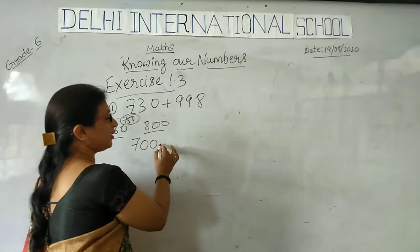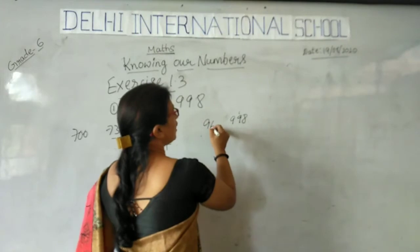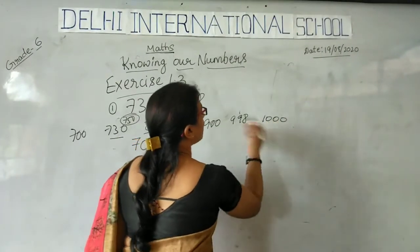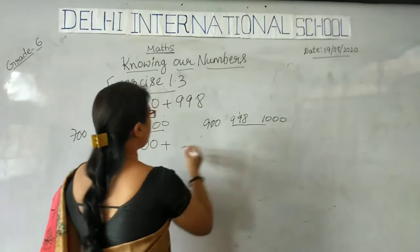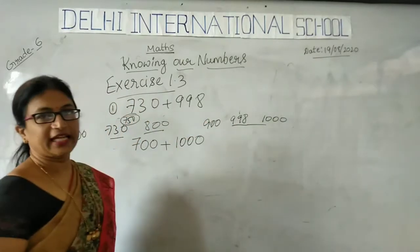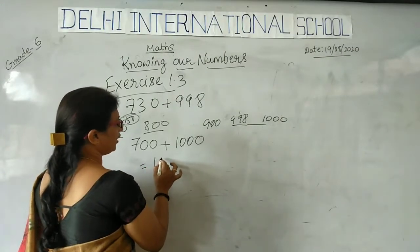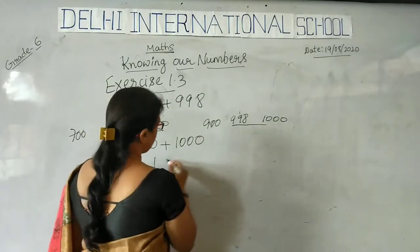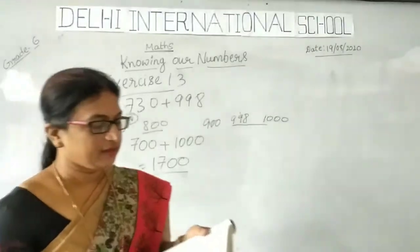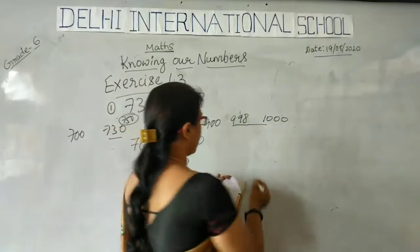So 998 is nearer to 900 or 1000 — it is definitely nearer to 1000. So instead of 998 I will write 1000. The estimated value is 1000 plus 700. Like this you have to solve this problem, for example number 1.